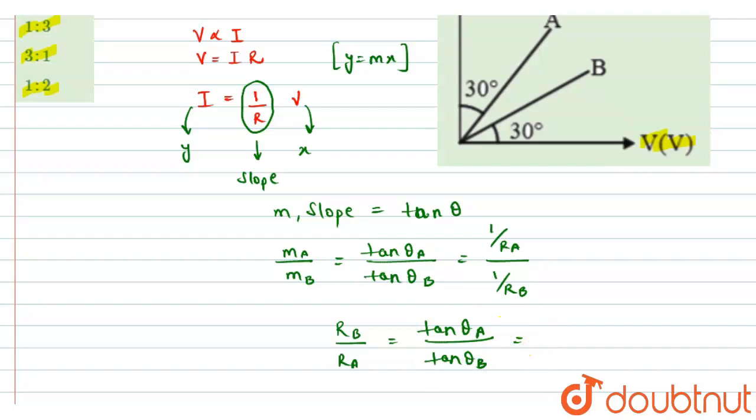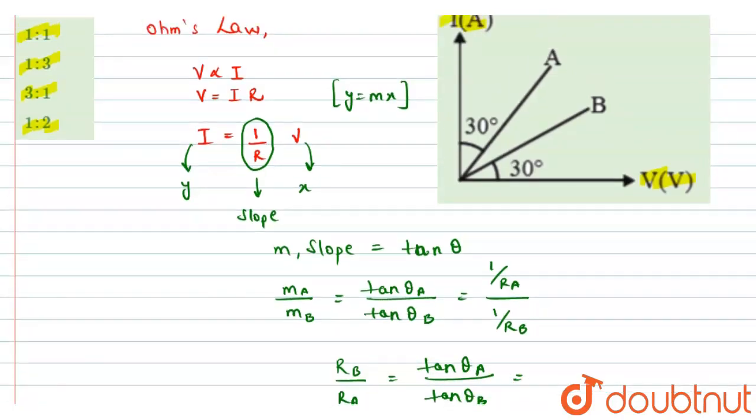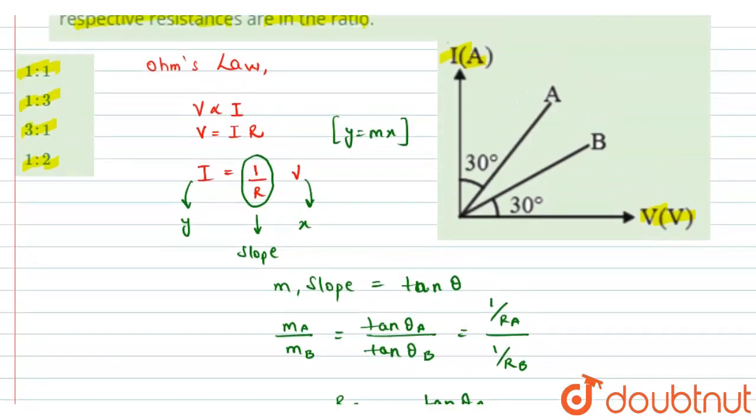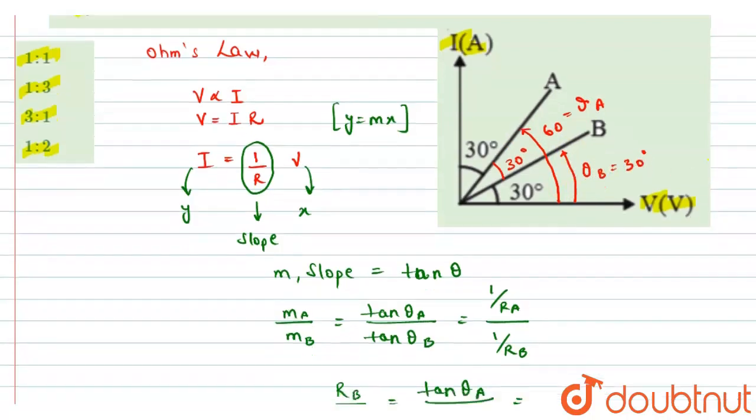So now, as we can see from the graph, the angle, the angle of A, see, this is 30, this is 30, so this angle would also be 30. And the angle of A from the x-axis would be 30 plus 30, that is 60 degrees. So this will be theta A angle. And for B, we will have angle of B would be 30 degree.